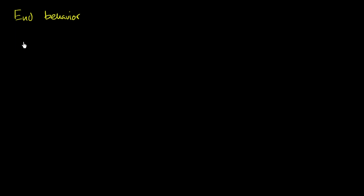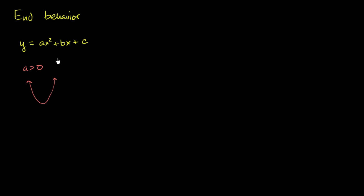For example, we're familiar with quadratic polynomials where y is equal to ax squared plus bx plus c. We know that if a is greater than 0, this is going to be an upward opening parabola. And if a is less than 0, it's going to be a downward opening parabola.